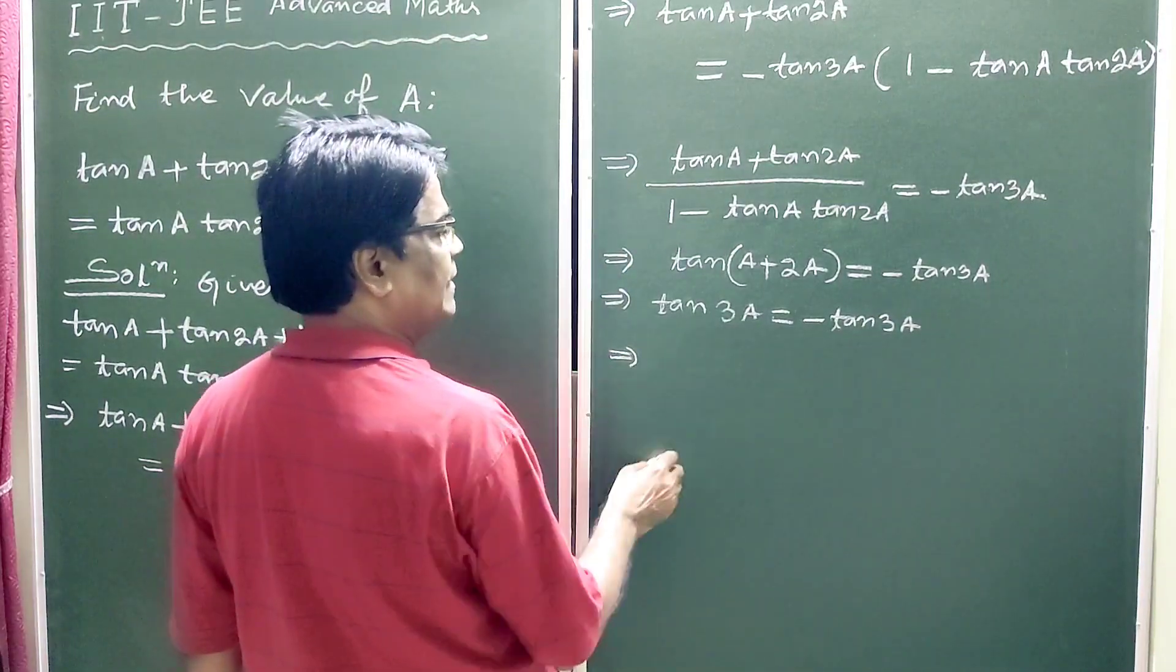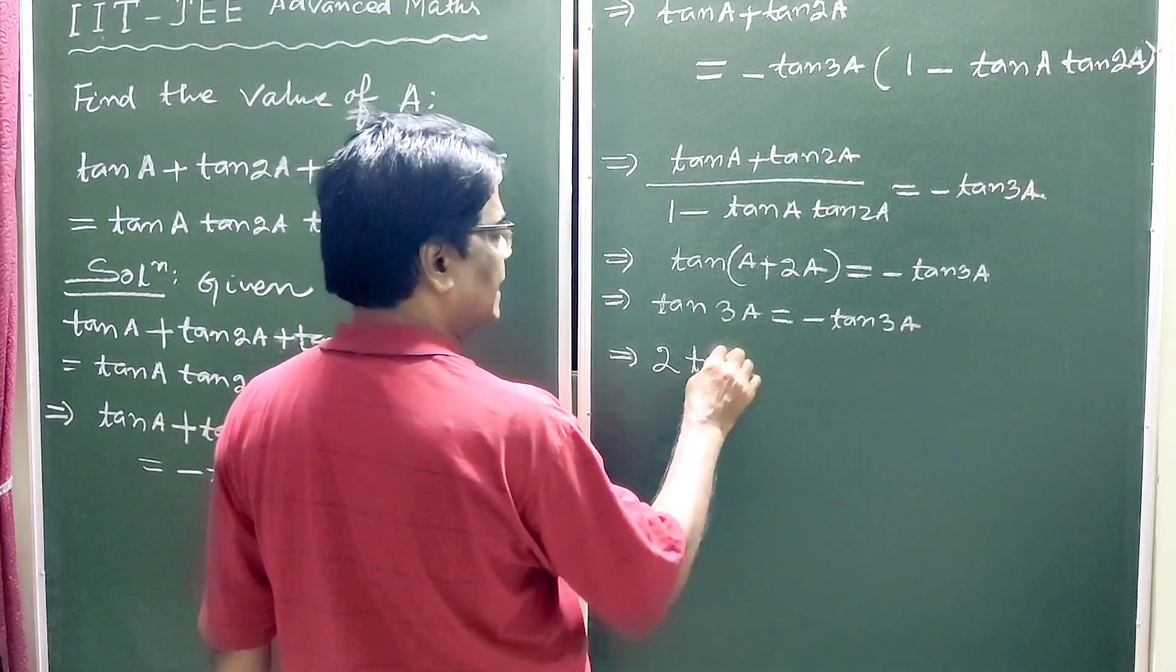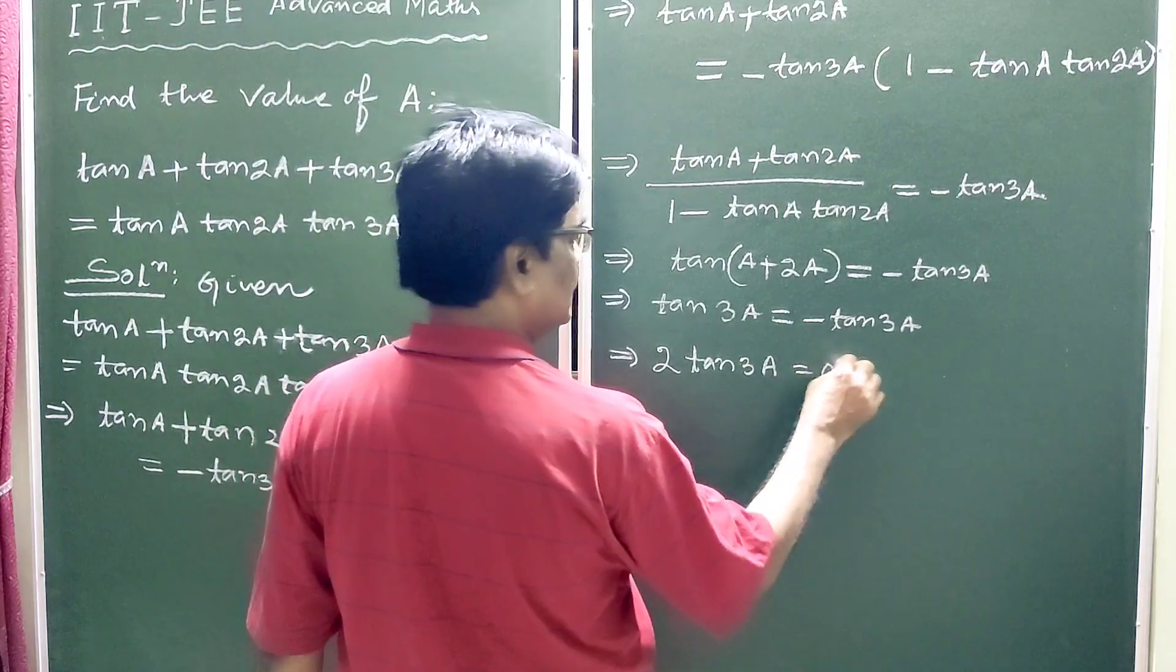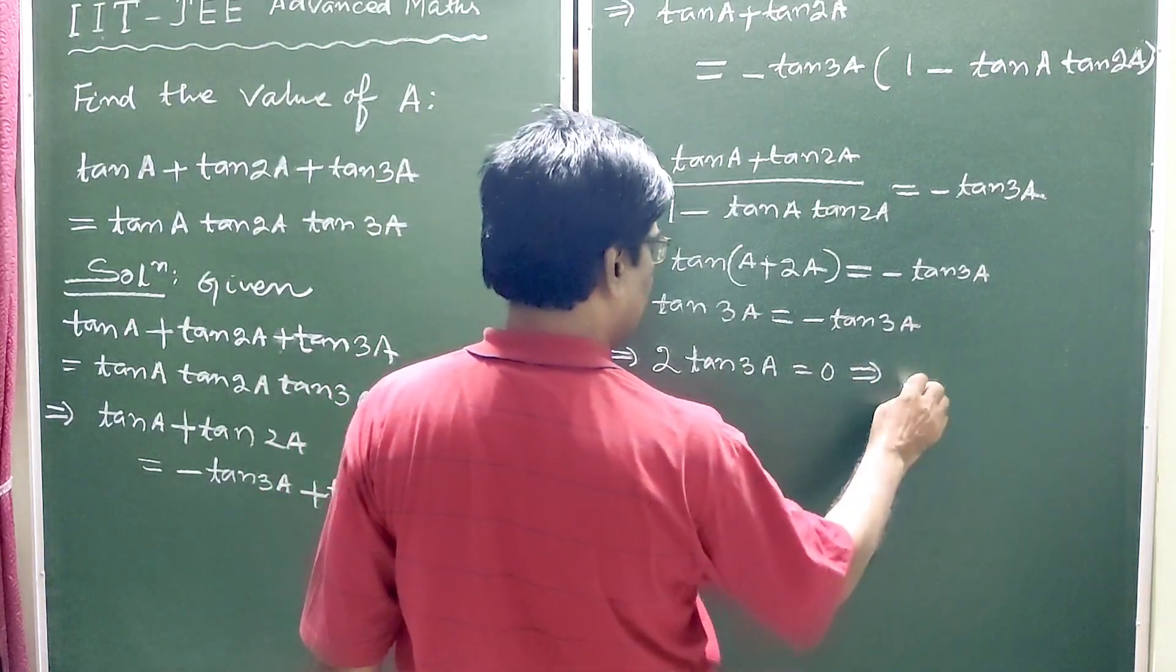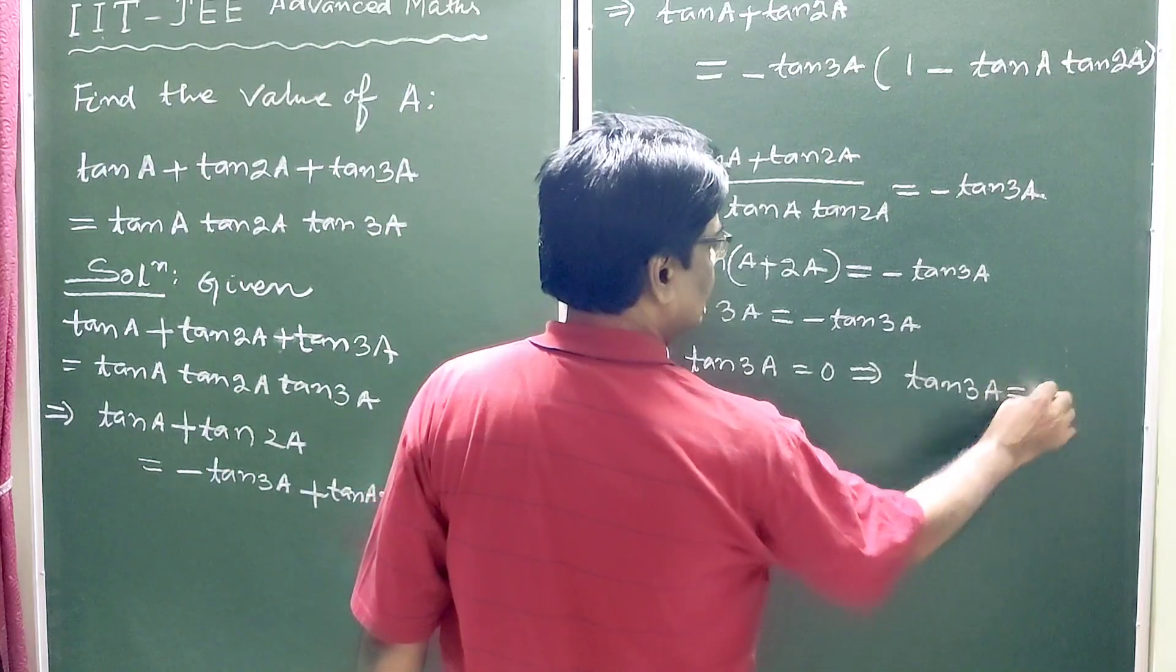This implies tan of A plus 2A equals tan 3A equals 0, which means tan 3A equals 0.